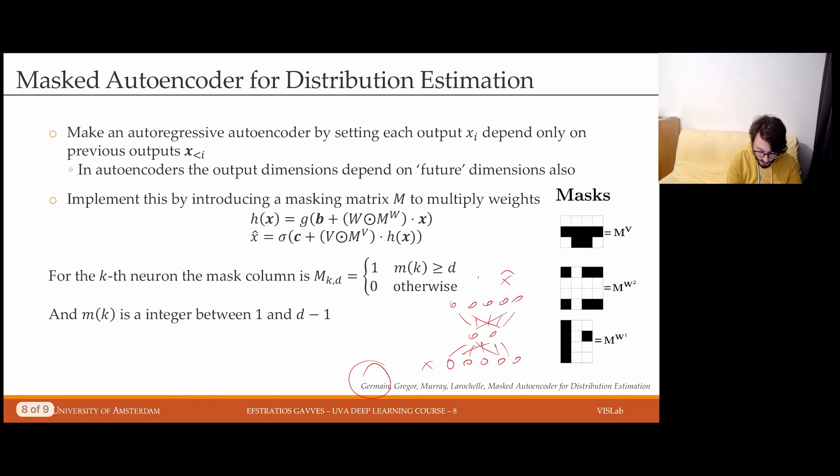Clearly, each of the dimensions here will be influenced by all the input dimensions of X, right? Because they're all contributing to the hidden activations and therefore to the output dimensions, the predictions of the output dimensions. So this is problematic because like that we cannot induce the autoregressive property which requires that we can have only access to past observations to make future predictions.